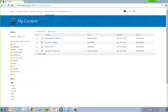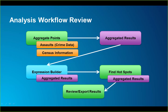Let's switch back to our slides and recap the entire workflow. We started by downloading data from Statistics Canada and the Regional Municipality of Halifax, brought that data into ArcGIS Online, and used those as inputs into the Aggregate Points tool to produce aggregated results. From there I used the Expression Builder to hard-code a calculated rate of assaults per square kilometer. Based on that calculated rate, I used that dataset as an input within the Find Hotspots tool, ultimately giving me a result that I could build research on and export to share with colleagues.